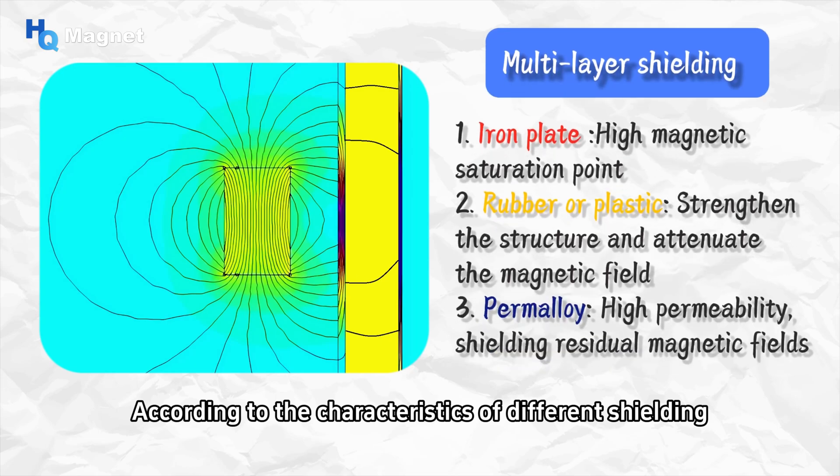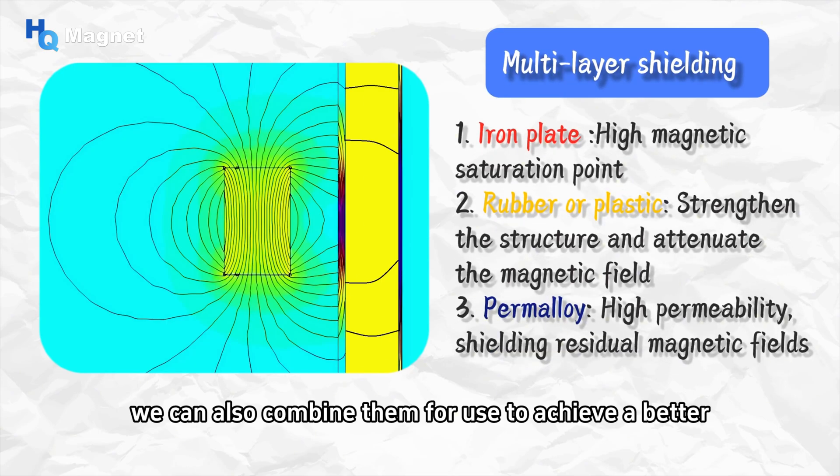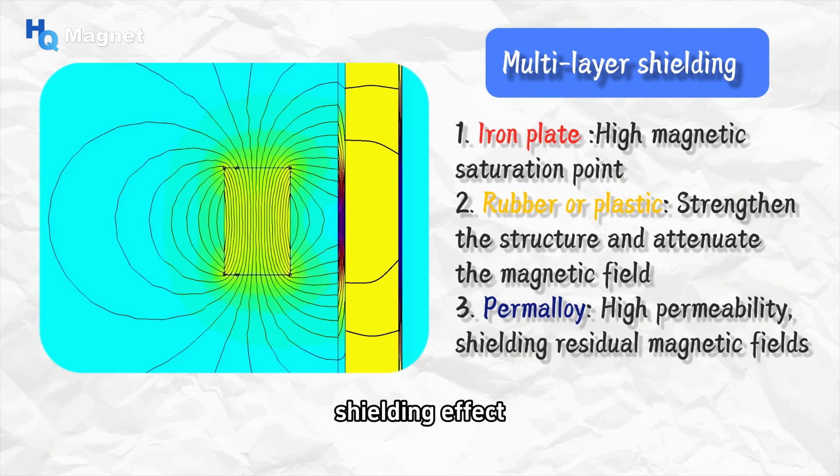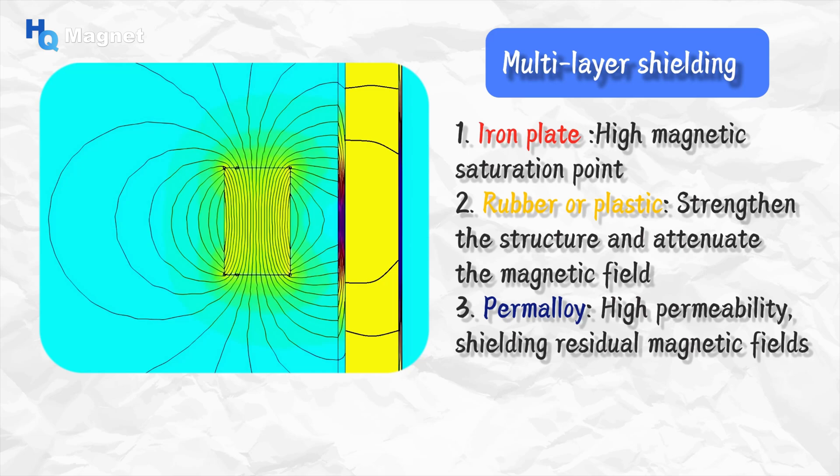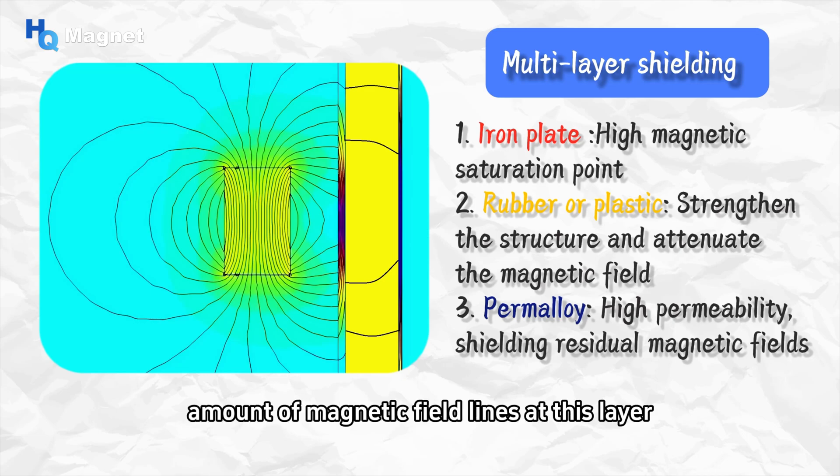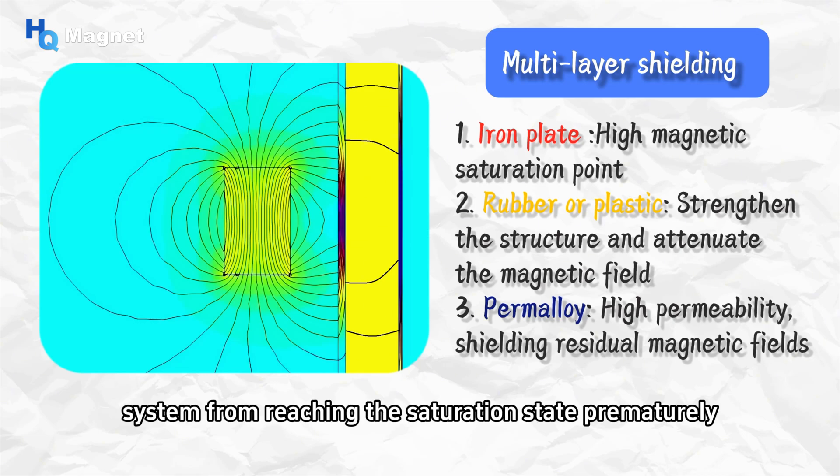According to the characteristics of different shielding materials, we can also combine them for use to achieve a better shielding effect. In the first layer of this magnetic field shielding structure, we used an iron plate. Pure iron has a quite high magnetic saturation point, which enables it to excellently absorb a large amount of magnetic field lines at this layer and avoid the entire system from reaching the saturation state prematurely.